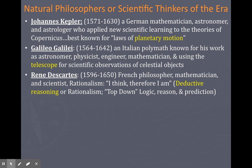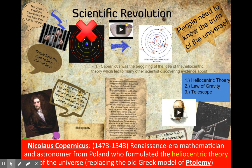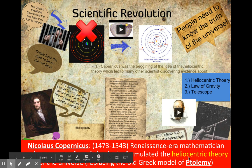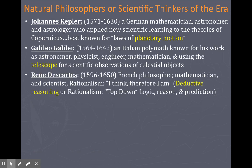Descartes was a French philosopher, mathematician, and scientist all about rationalism — the idea of deductive reasoning, which is top-down logic. Think D and D: Descartes = deductive. Galileo is famous for the telescope, Kepler for planetary motion, and Copernicus for the original heliocentric theory. The other key figure is Francis Bacon — think of the scientific method and inductive reasoning, or empiricism — that's bottom-up, observation, experimentation.